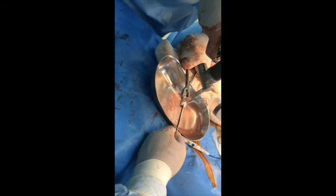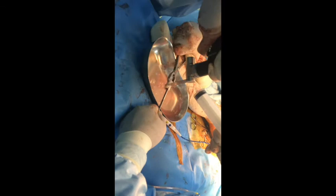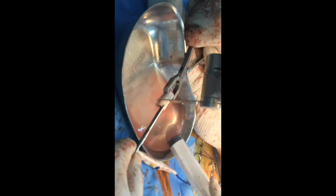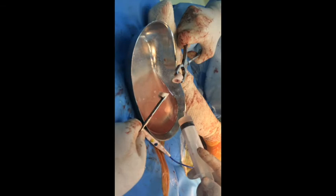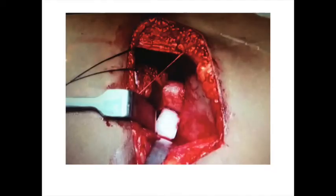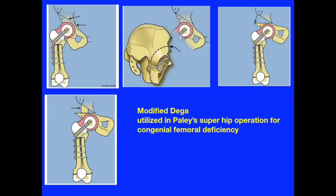In children older than three years, we may use a piece of femoral shaft obtained during the shortening osteotomy procedure. We cut it into two trapezoidal pieces to be insinuated between the upper and lower segments of the gap. By the resiliency of the tri-radiate cartilage there is no need to fix these segments together, although some surgeons use cancellous screws in older patients. In Paley's super hip surgery for congenital femoral deficiency, he utilized the modified Dega osteotomy to cover the head and create an excellent roof to prevent dislocation during limb elongation.